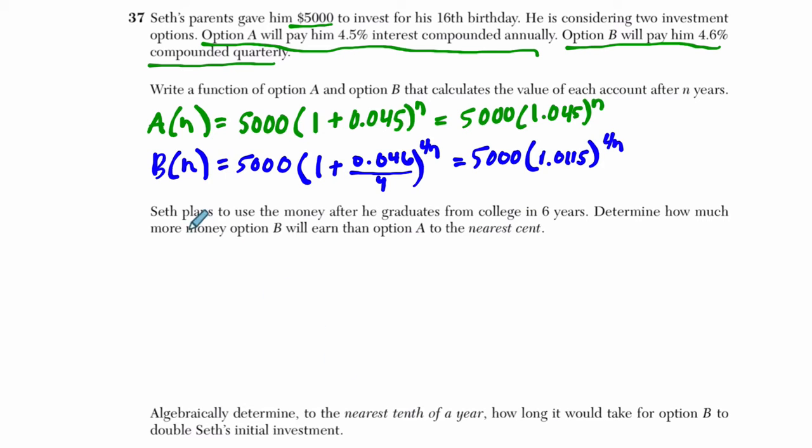In the next part, it says Seth plans to use the money after he graduates in 6 years. Determine how much more money option B will earn than option A. To show your work right here, you can just say it's going to be B of 6 minus A of 6. You're plugging 6 into both functions. But I'm going to also show the work here. Let me just check student work real quick. If you calculate what B of 6 and A of 6 are and subtract them, they would give you full credit here.